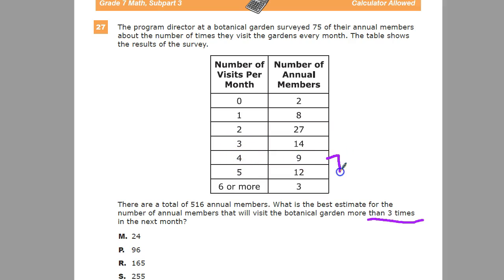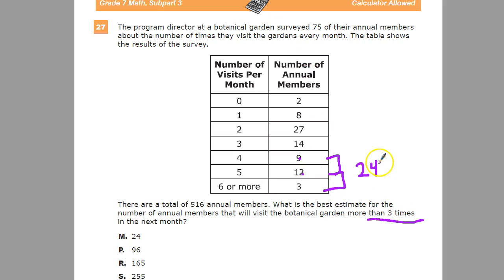From the table, the values greater than three are 9, 12, and 3. So 12 plus 3 is 15, plus 9 gives you 24. My ratio for the people who go more than three times in the sample group is 24 out of 75.